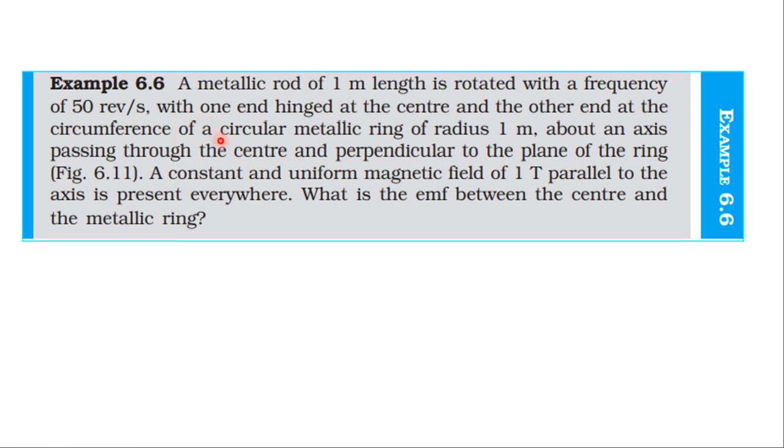From the textbook topic of electromagnetic induction, Example 6.6: A metallic rod of 1 meter length is rotated with a frequency of 50 revolutions per second, with one end hinged at the center and the other end at the circumference of a circular metallic ring of radius 1 meter, about an axis passing through the center and perpendicular to the plane of the ring.